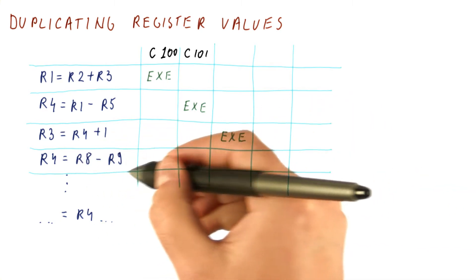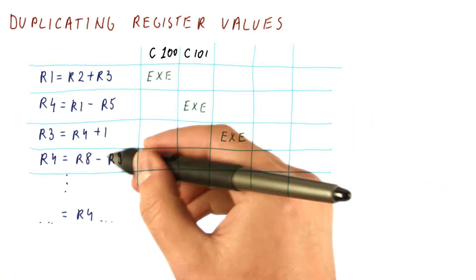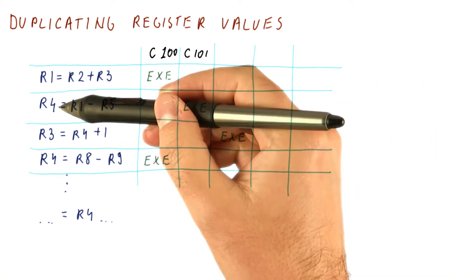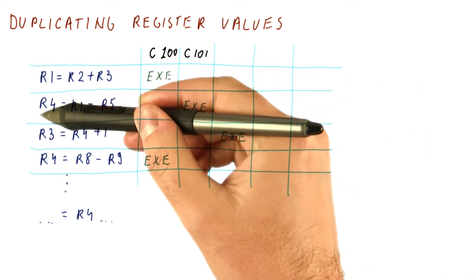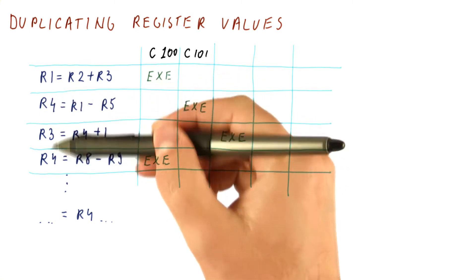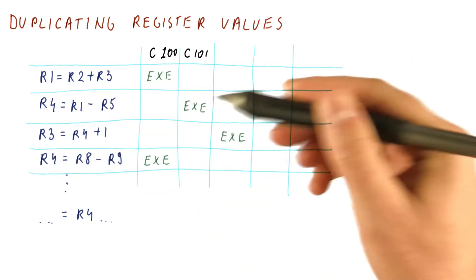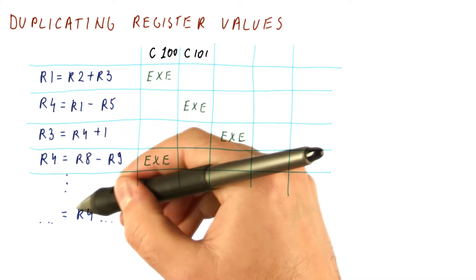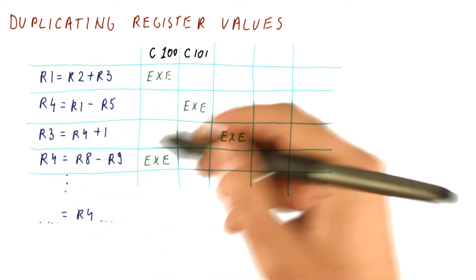However, this instruction, which is doing R8 minus R9, could actually execute here. So the problem with false dependencies occurs in that R4 is written by this and also this instruction. So let's see which final value of R4 ends up in the register so that it is used much later here.